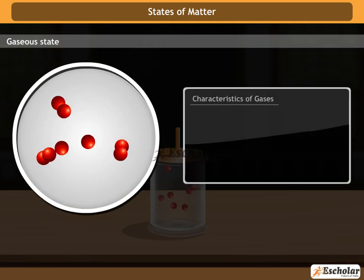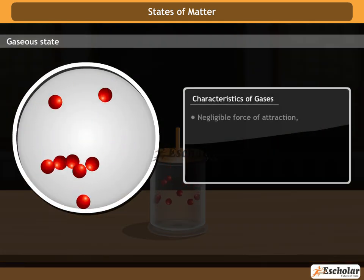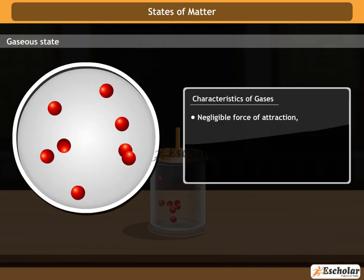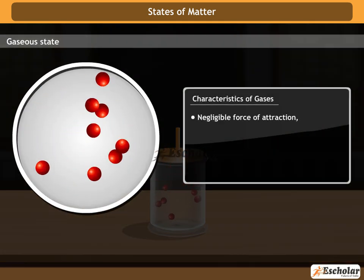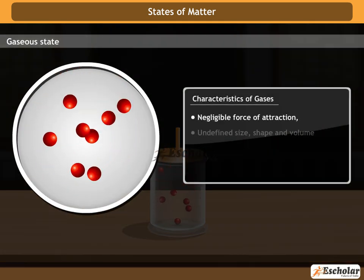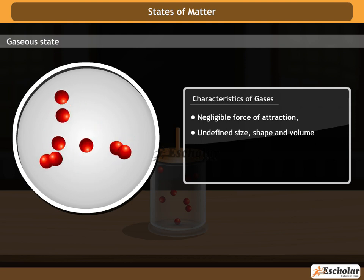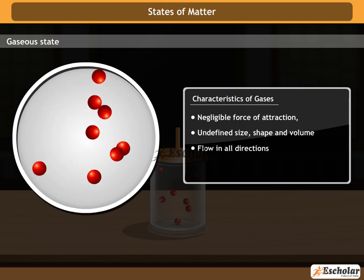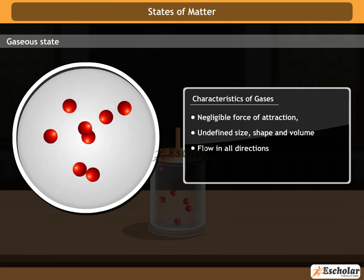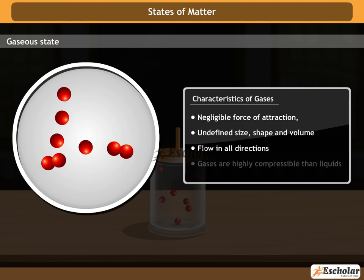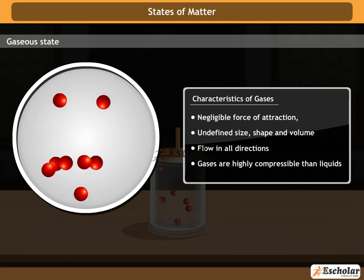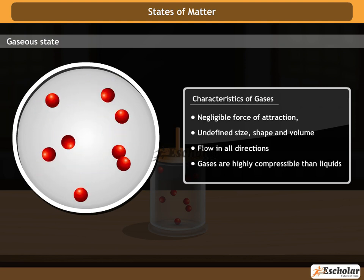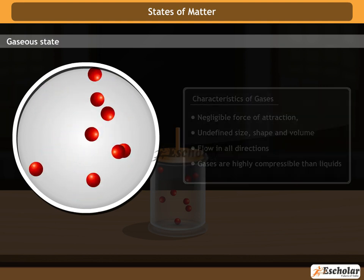Characteristics of Gases: Gases have negligible force of attraction, undefined size, shape, and volume, and flow in all directions. Gases are highly compressible compared to liquids.